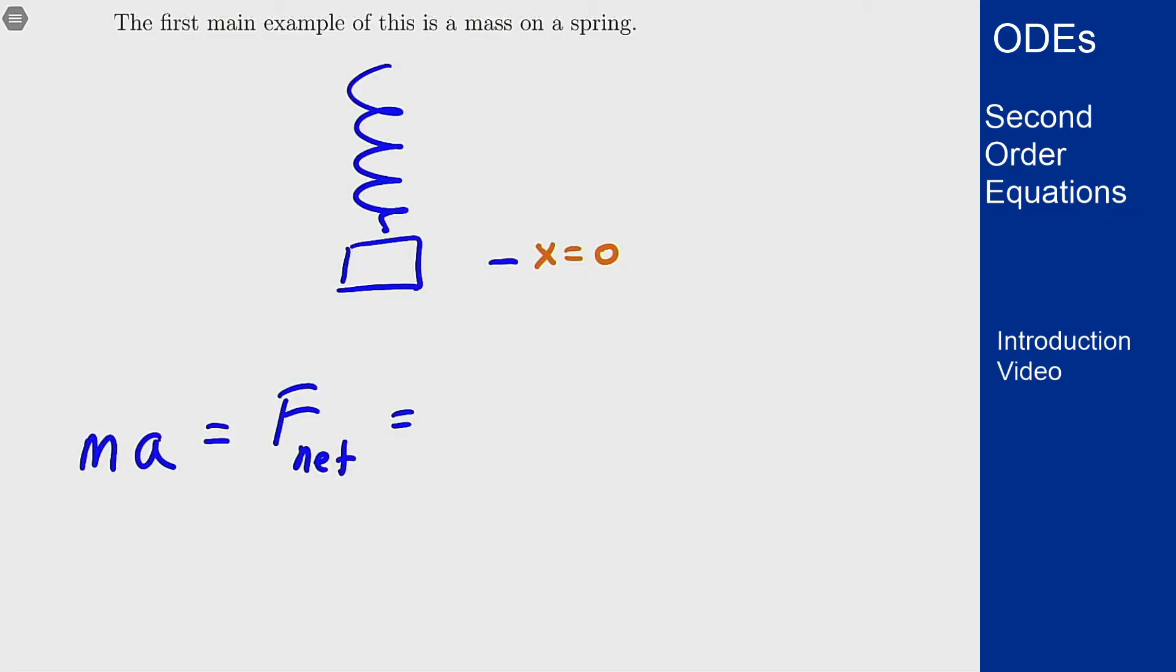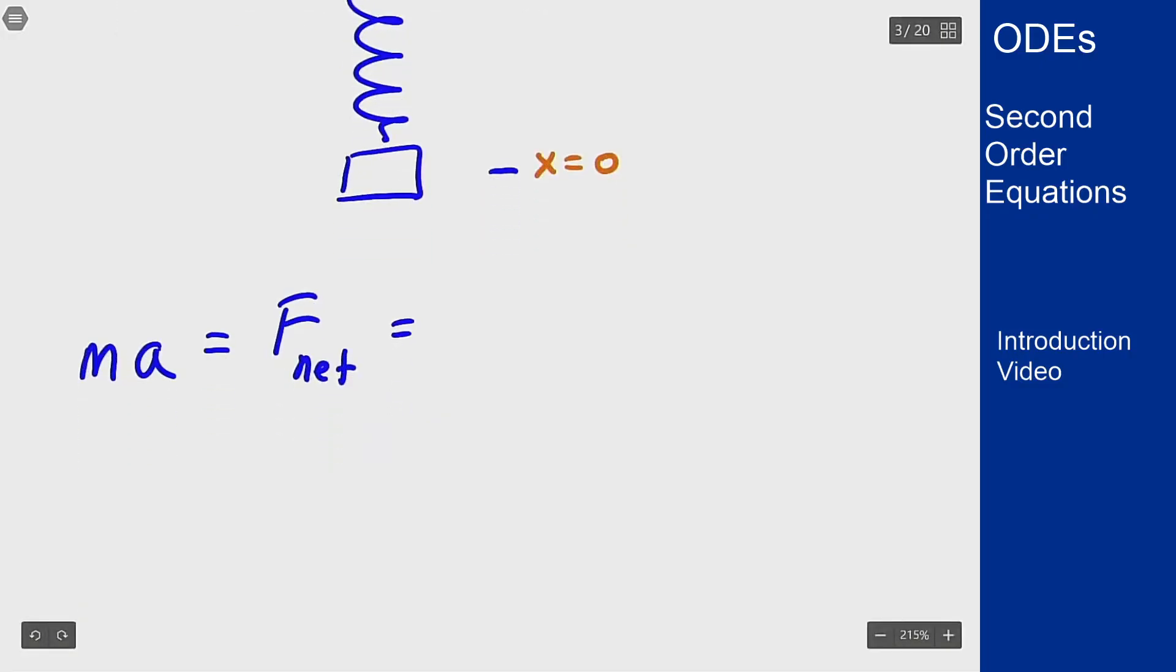Now what acts on the object? Well, it's the force of the spring. The force of the spring is going to pull it back towards or push it back towards this stable point here, and Hooke's law tells us that the force in this situation is proportional to the position from the zero point, so this gives us a force of negative k times x.